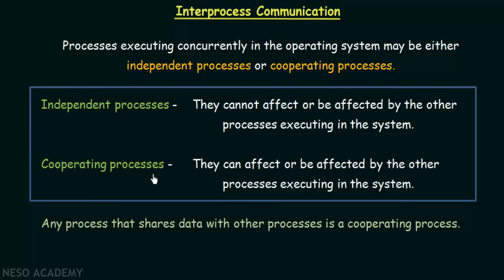Cooperating processes are those processes that can affect or be affected by the other processes executing in the system. An example of cooperating processes are any process that shares data with other processes. If one process is sharing data with another process, then that process can affect the other process. If two processes are sharing data, those two processes will be affected by each other. Independent processes are not sharing anything and they are executing in their own ways and are not affected by each other.